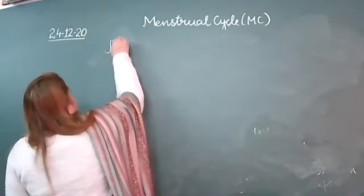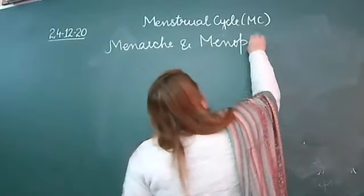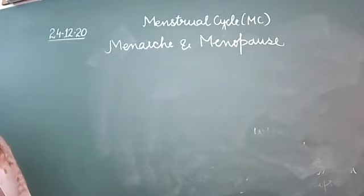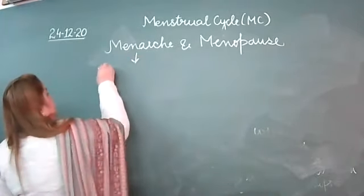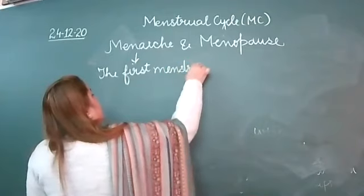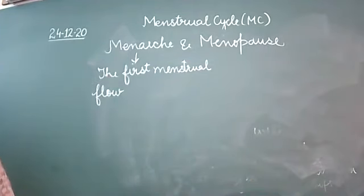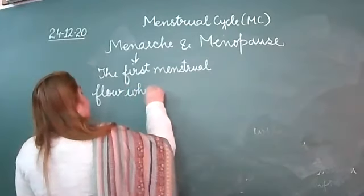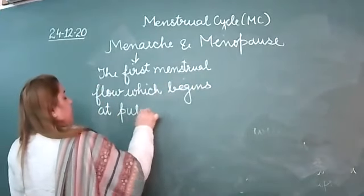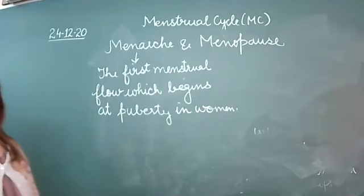Now, two terms we need to note down: menarche and menopause. Menarche means the first menstrual flow, which begins at puberty in women.